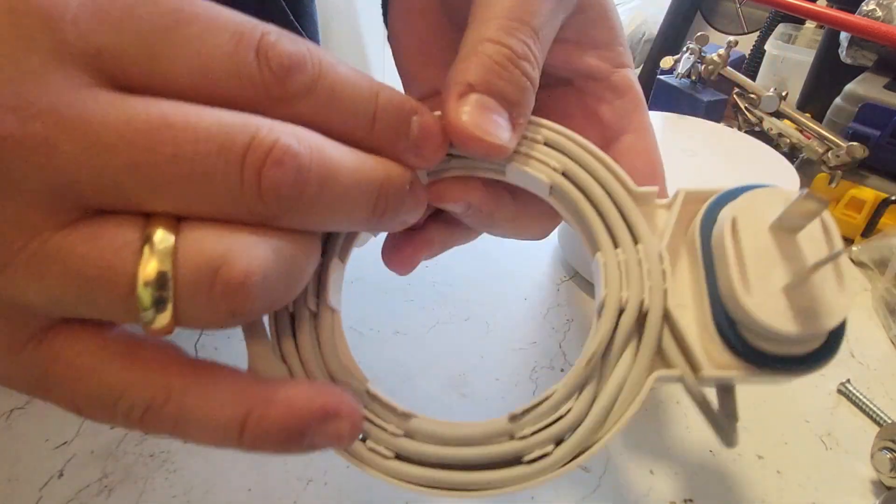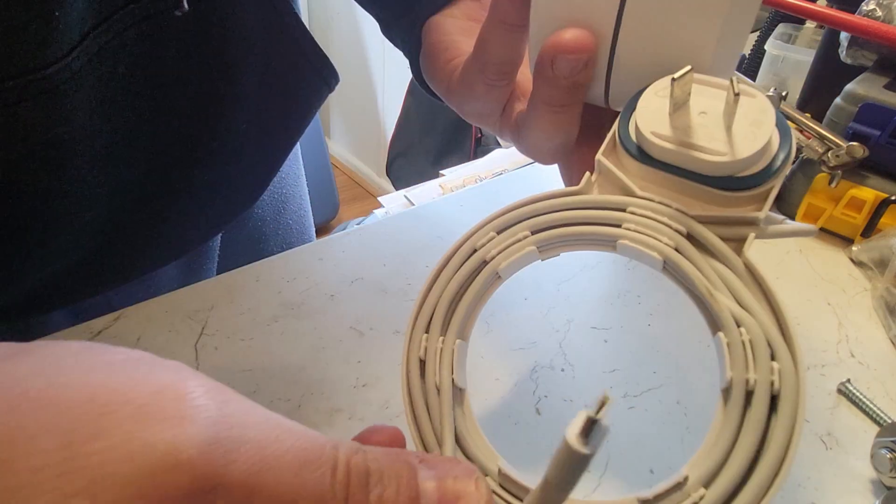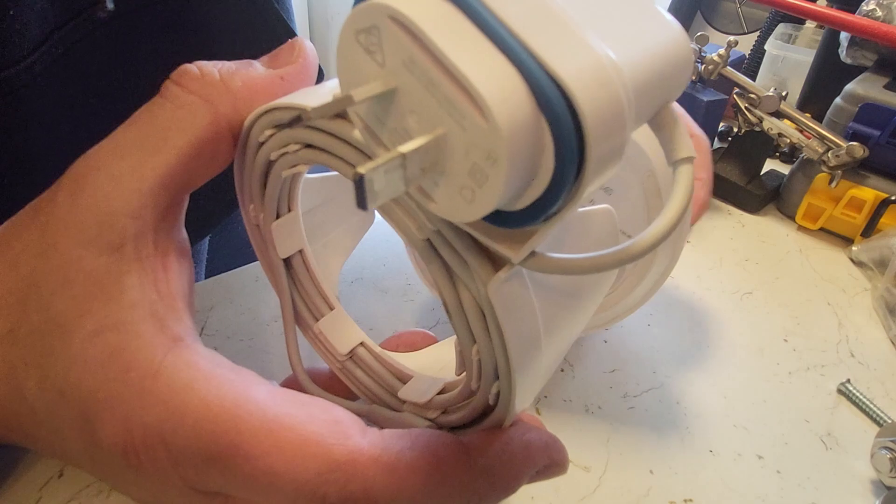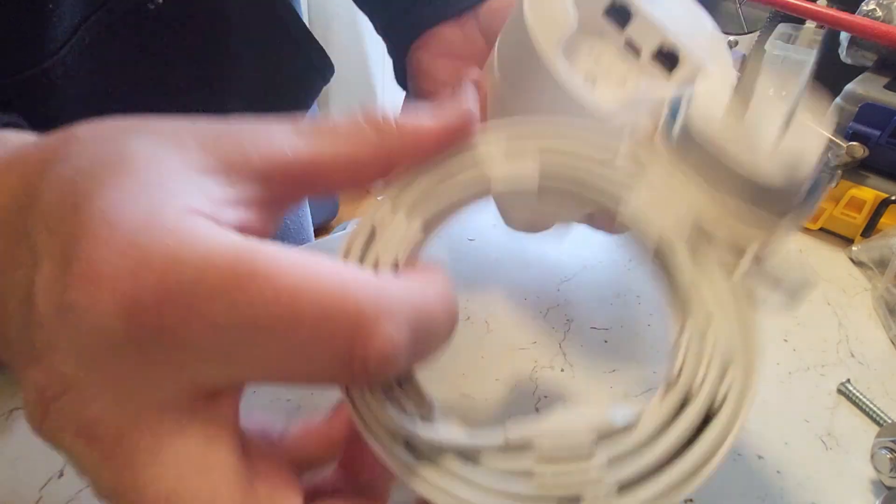So you sort of come all the way around here, bring it up around. You can align it to wherever, whichever point, so that when you put in your Google Wi-Fi, you'll be able to plug this in to your Wi-Fi point.